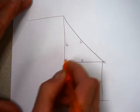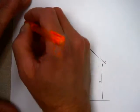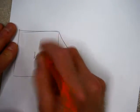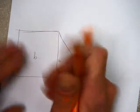If this is a square here, what's this area? B squared. Okay, not sub 2. B squared.